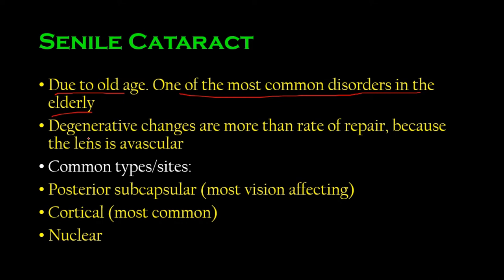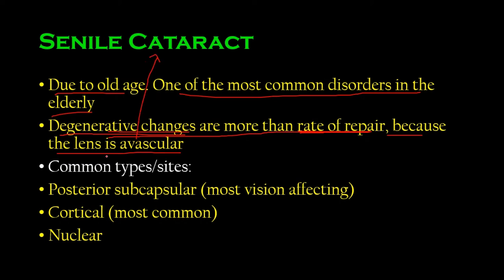Cataract is a degenerative change in the lens. The thing about avascular structures is they cannot receive nutrients and building materials as efficiently as vascular structures. So if there are degenerative changes in the lens, repair will be very slow — the rate of degenerative change exceeds the rate of repair. The same is true of cartilage, which also heals very slowly. Because the lens is avascular, it can't repair effectively, and that results in cataract.